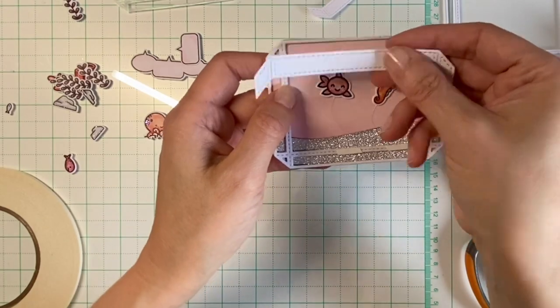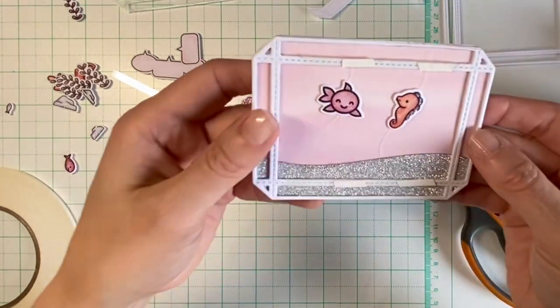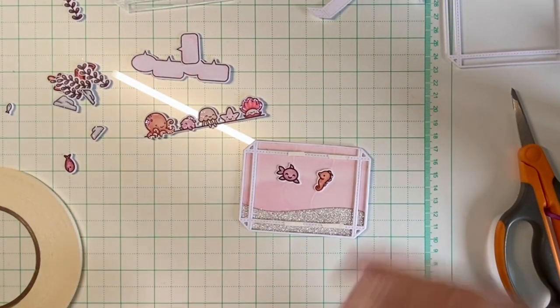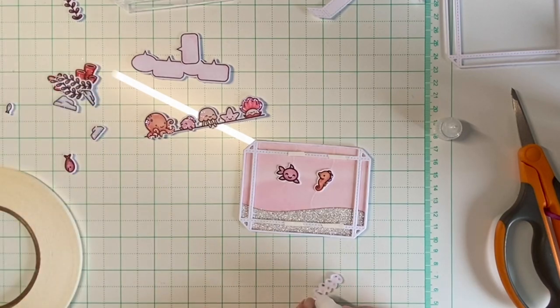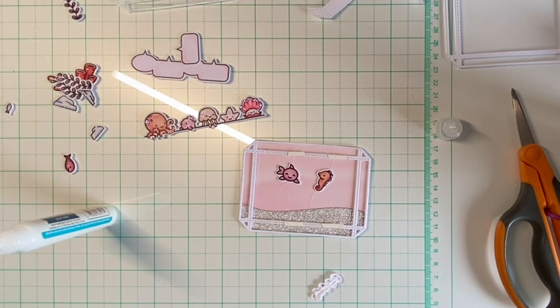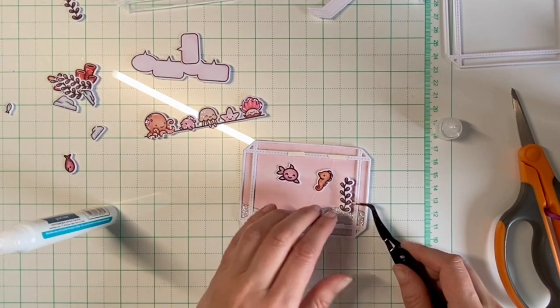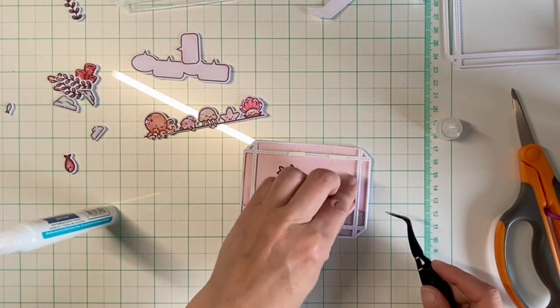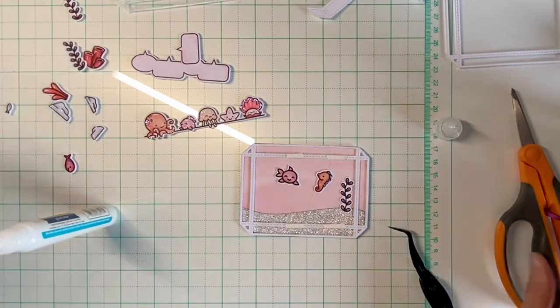Now I'm adding all of my images using liquid glue and making sure that it is well adhered so that the shaker pieces that we will put in our aquarium won't get stuck at them.